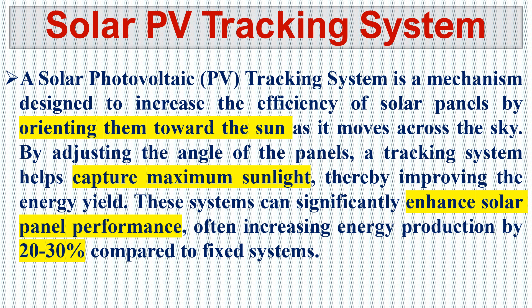This system can significantly enhance solar panel performance by increasing output by about 20 to 30 percent compared to a fixed system. So if we have a proper solar PV tracking system, we can increase solar power production by 20 to 30 percent — that's a huge amount of increase.